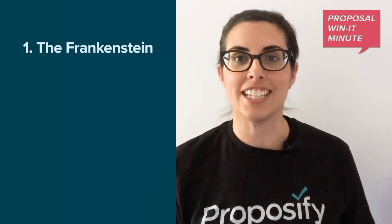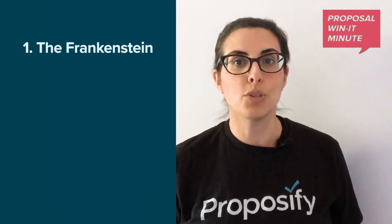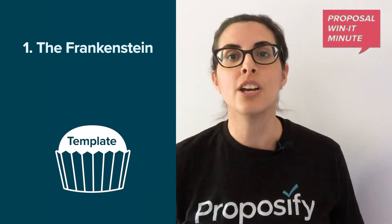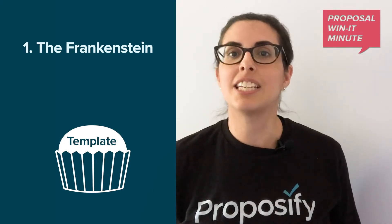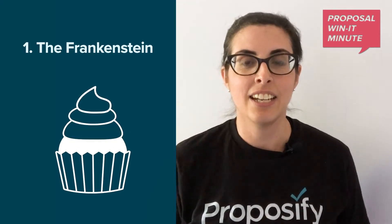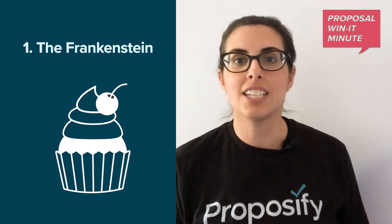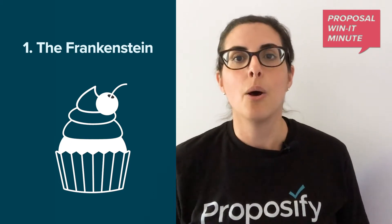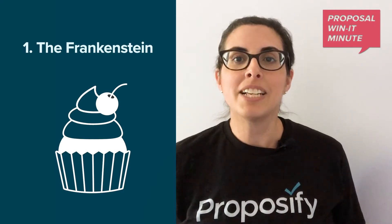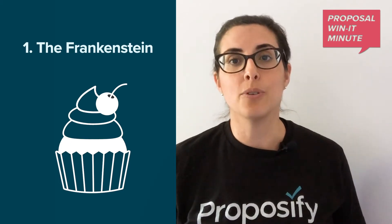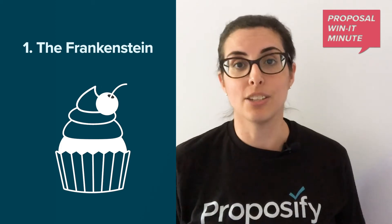Up first is one we call the Frankenstein, which is where you create a principal template with placeholders so sales reps can easily add the content they need. It's good for sales teams that want to simplify the proposal process while maintaining control over the info that's going into the proposals.